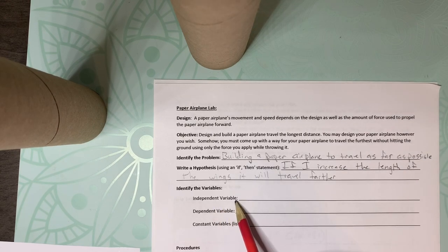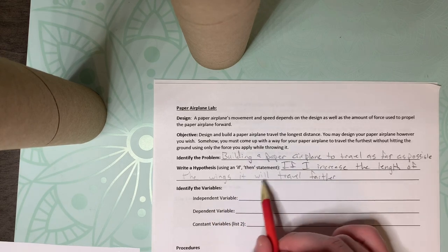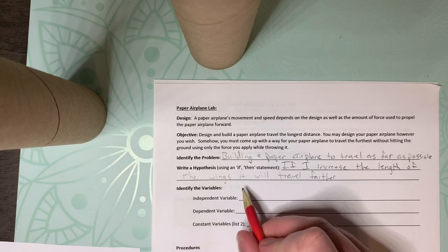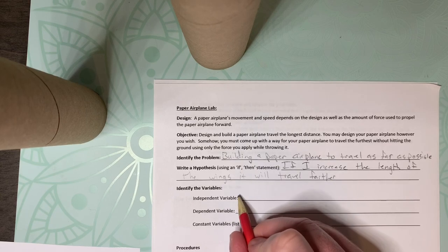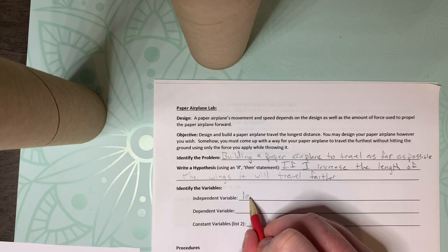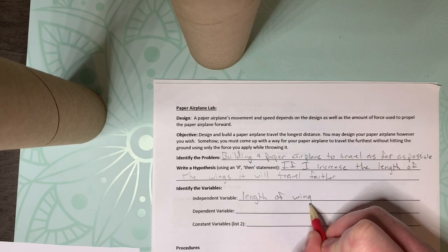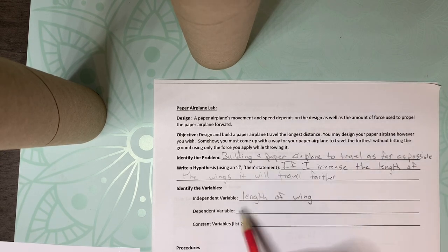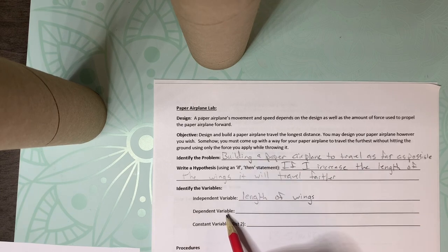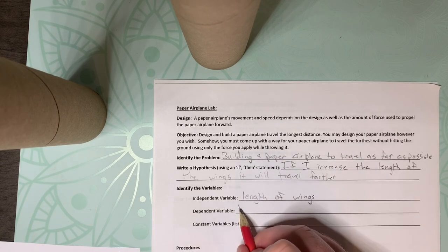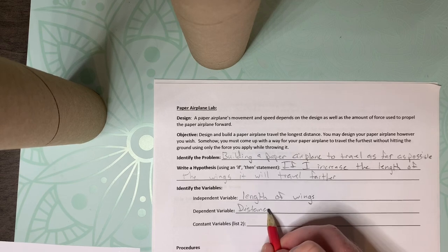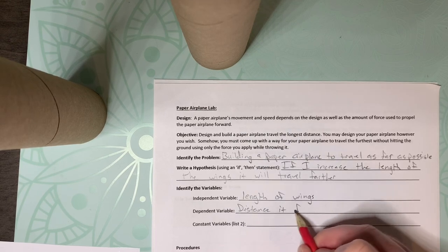So my independent variable is what we are changing. So for mine, it goes right with my hypothesis. My independent variable is going to be the length of wings. My dependent variable is what we're going to measure, and that is the distance it flies.